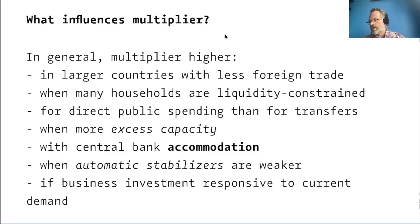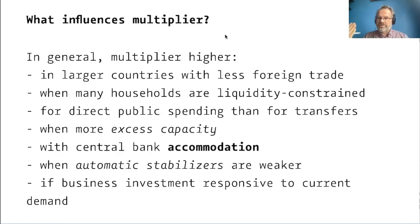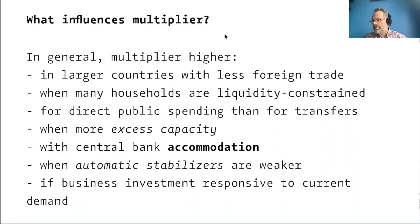We think the multiplier is higher for direct public spending than for transfers. With direct public spending — building a road, a hospital, a school, military spending — that adds to GDP immediately as the spending takes place, and the incomes generated produce additional consumption spending down the road. With transfers, you don't get that initial hit; you only get the induced consumption spending. Whatever is saved or paid in taxes is subtracted right up front when talking about transfer spending, and there may be additional delays before recipients respond.